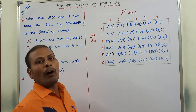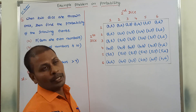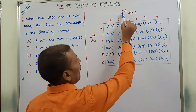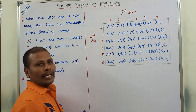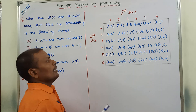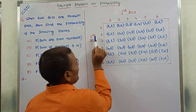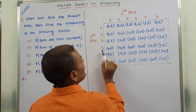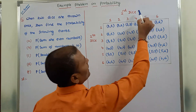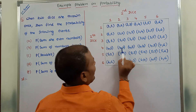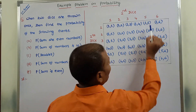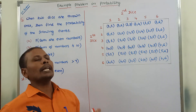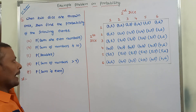Each order pair is obtained by taking the row number and column number. For example, if we take 4 from the first dice and 5 from the second dice, we get the order pair 4 comma 5. In this way, we are getting 36 possibilities.